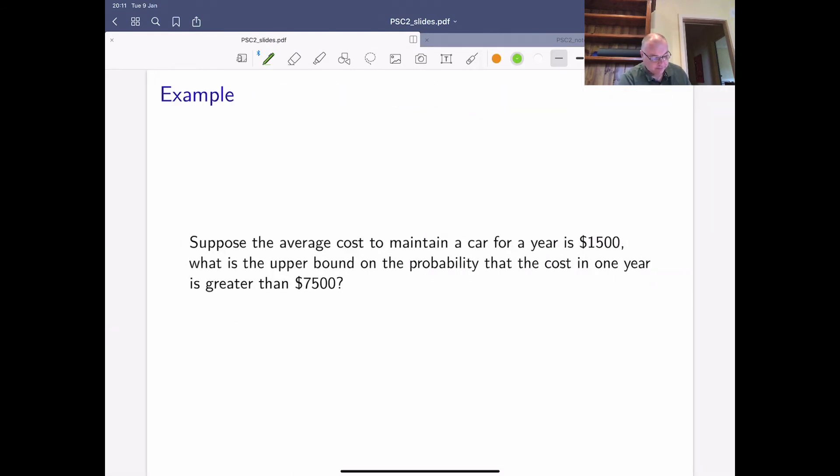So let's use it. Suppose the average cost to maintain a car for a year is 1,500. What is the upper bound of probability that the cost in one year is greater than 7,500? So classic thing, I've just given you an inequality. I've given you a wordy type problem. But what you need to do is you need to look at that and figure out how do I get the expected value of Y? How do I get a? So let's have a go.